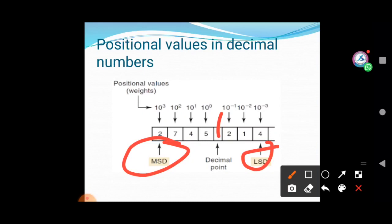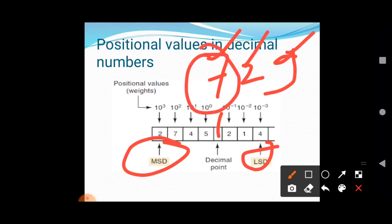For example, consider the decimal number 729. Suppose we take 729. What is 7? 700, this is 20, 2 tens and 9 units. 9 represents 9 units. 7 is the MSD means most significant digit and 9 is the LSD means least significant digit. Consider another example 25.12.